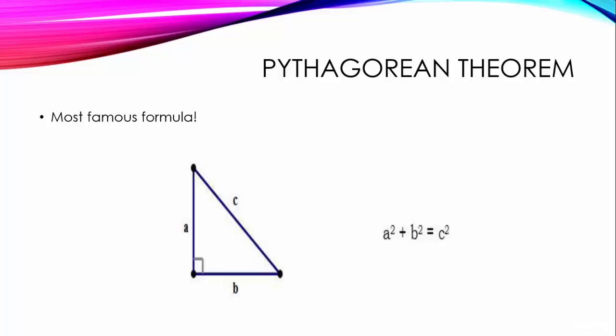Of course, I'm sure you remember that it says, for any right triangle, A squared plus B squared is equal to C squared. Of course, if any question gives you two sides of a right triangle and asks you to find the third, you will use this formula.